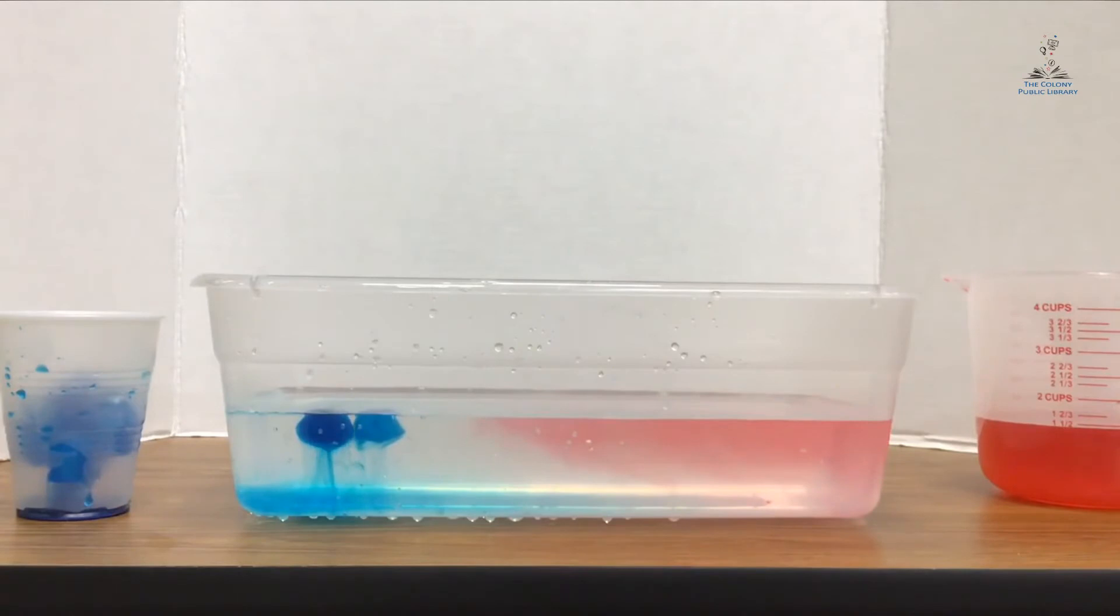Do you notice how the blue cold water is staying close to the bottom? It's not even going up to the top at all. It's staying on the bottom of the container, and the red hot water is only at the top of the water. It's not going down to the bottom at all.